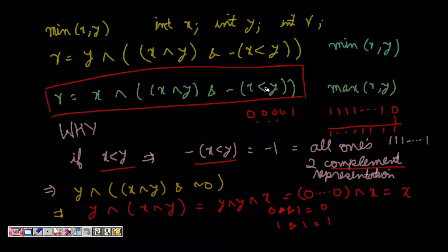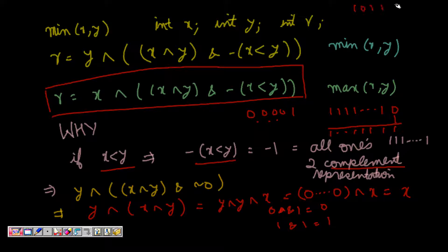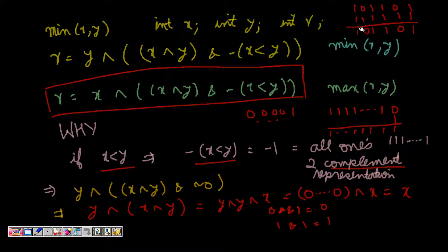So when x is less than y, the part -(x < y) becomes all ones. If you AND any number with all ones, you get the number itself. For example, if we have a number like 101101 and AND it with all ones, we get 101101 — the number itself. So the expression (x XOR y) AND all-ones simply gives us (x XOR y).